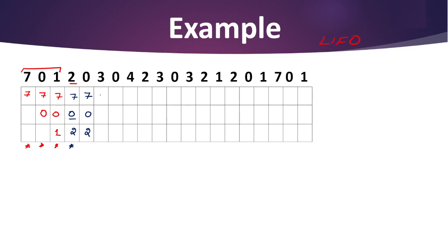Remember — Last In First Out. Looking at the order values entered: 7 first, then 0, then 2. So the last value entered is 2. We can easily replace 2 with 3. The frames now hold 3, 0, 7. Since 3 was not already available, there is one page fault. Next value is 0, which is already available — no page fault.